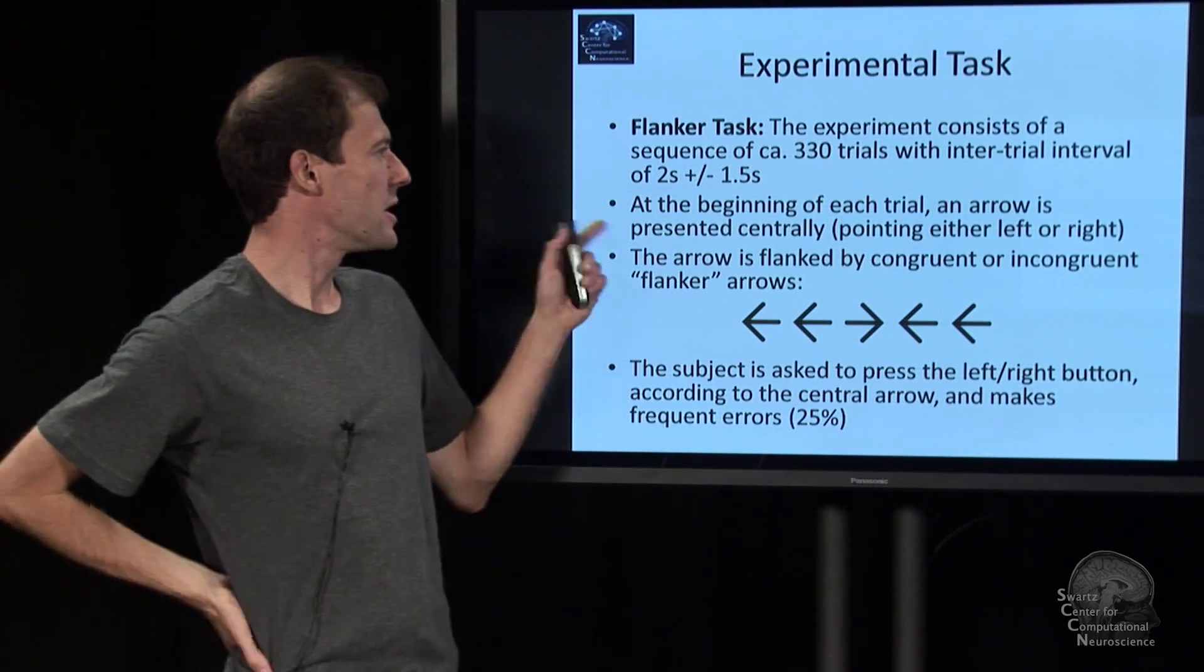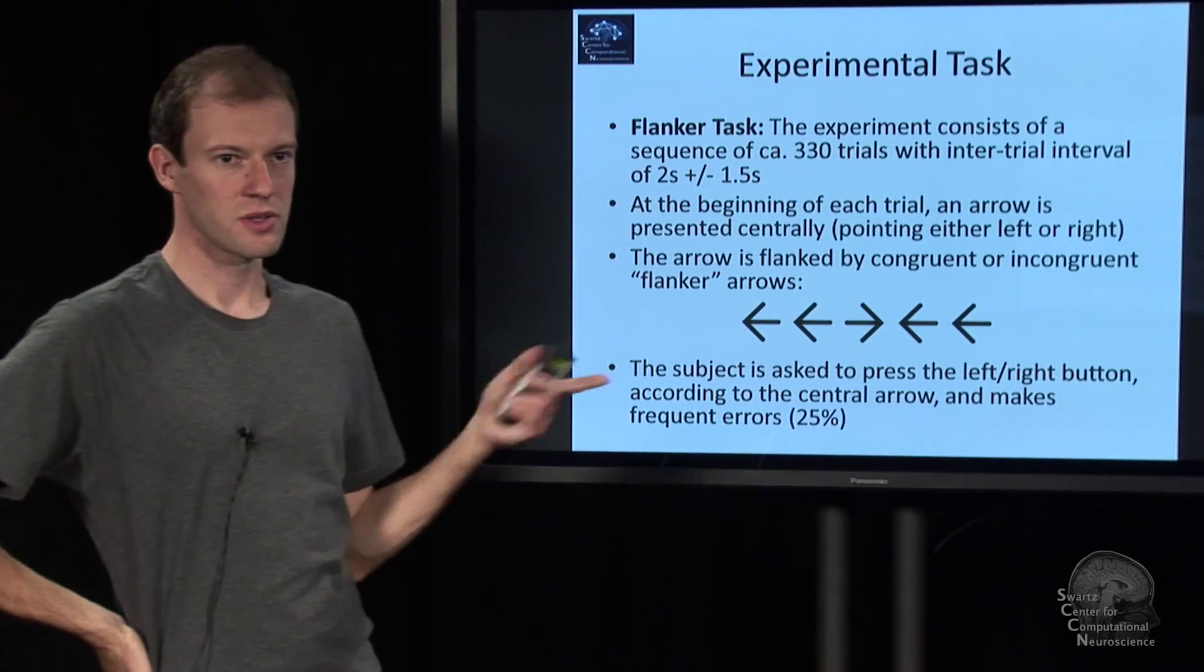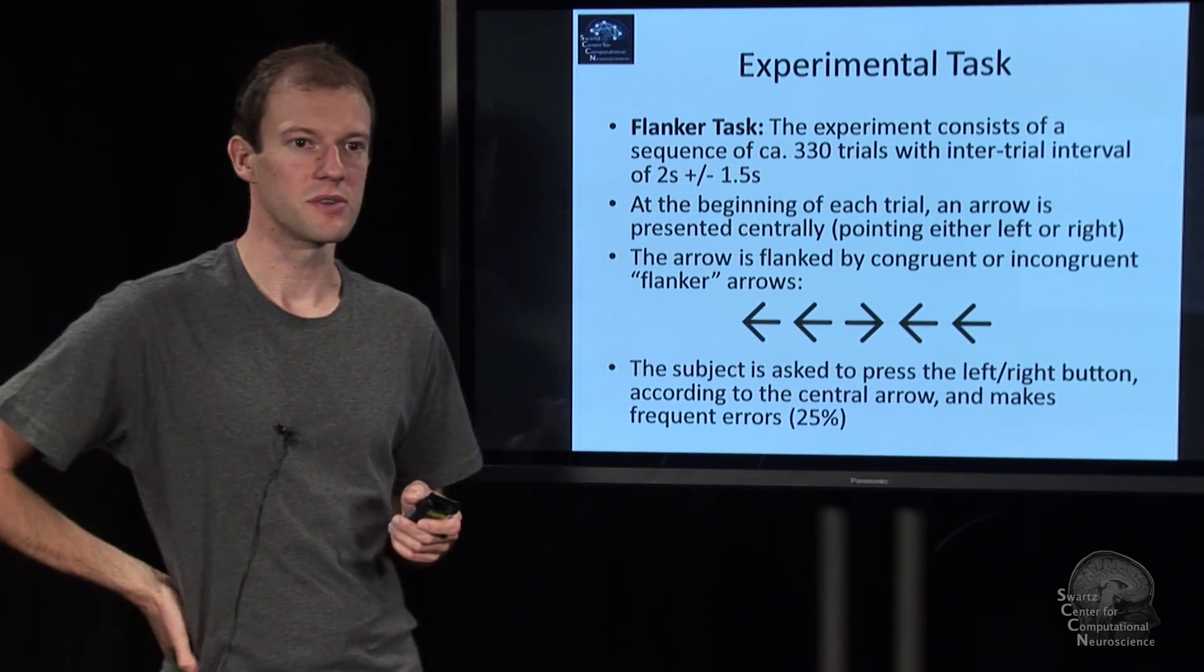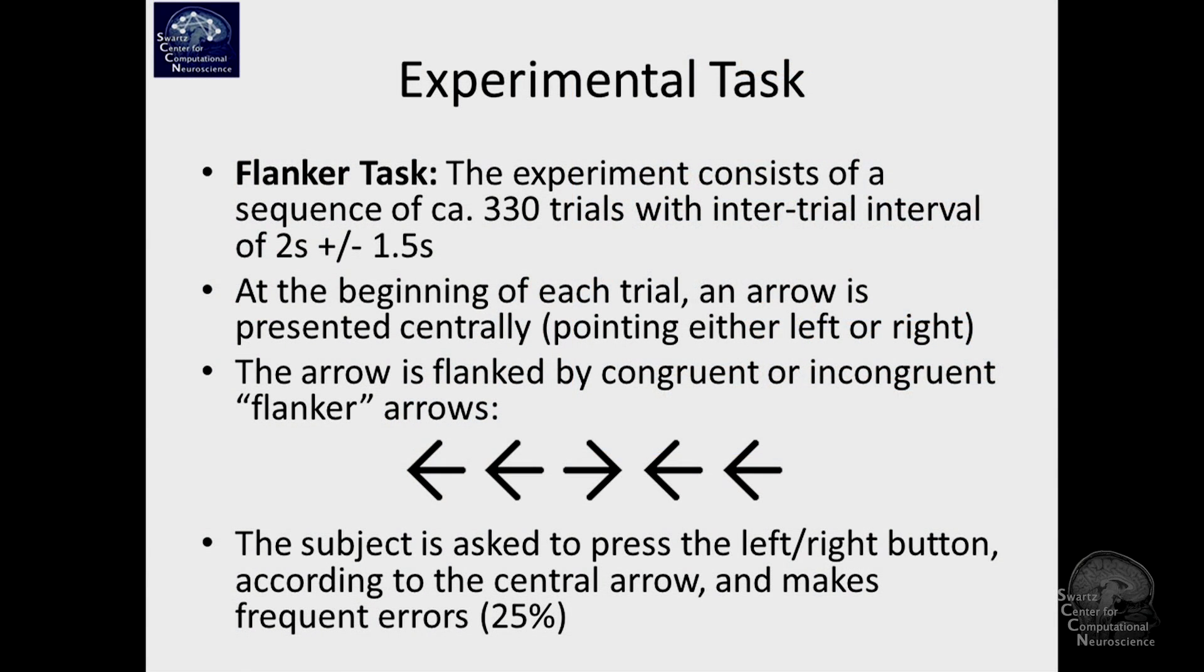So we have a sequence of trials, in our case here it's 300 something trials, with an intertrial interval of two seconds plus minus one and a half. And at the beginning of each trial, or early in the trial, there's an arrow being presented centrally.